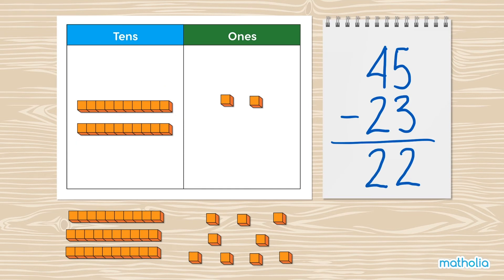We're all done! So, 45 minus 23 equals 22.